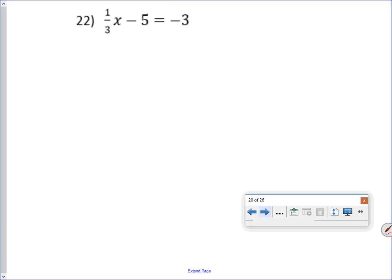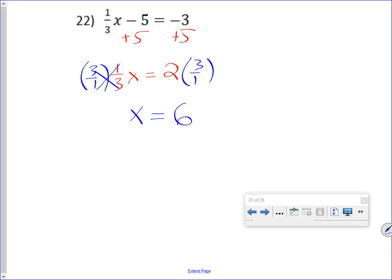Here, add 5 to both sides and I'll get 1 third x equals 2. And then I divide both sides by 1 third but remember, dividing by fractions is the same as multiplying by the reciprocal. And I'll get x equals 6.